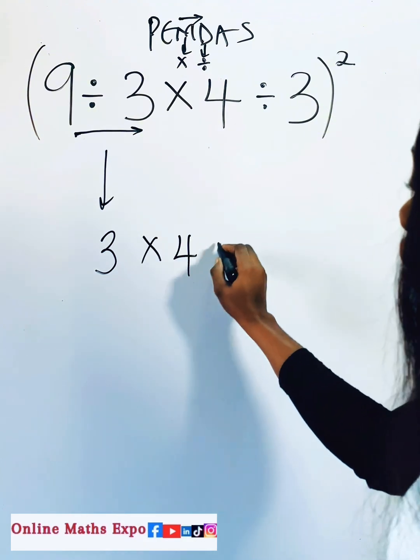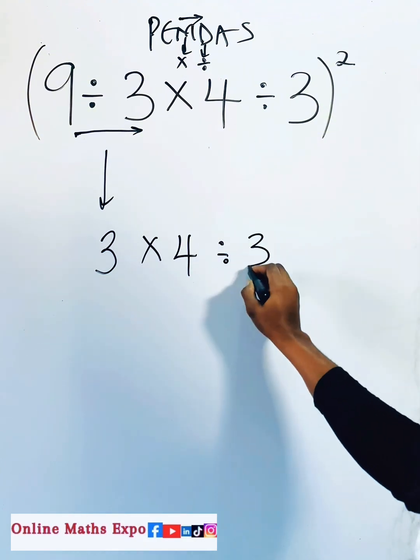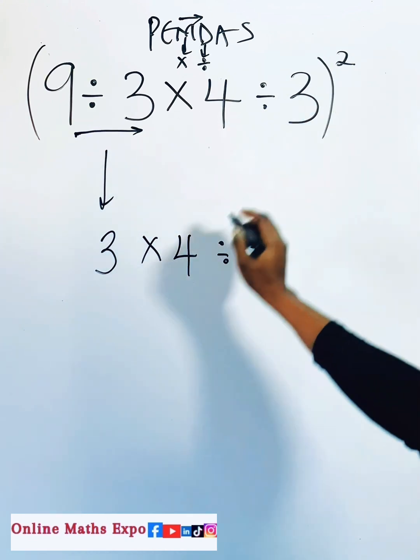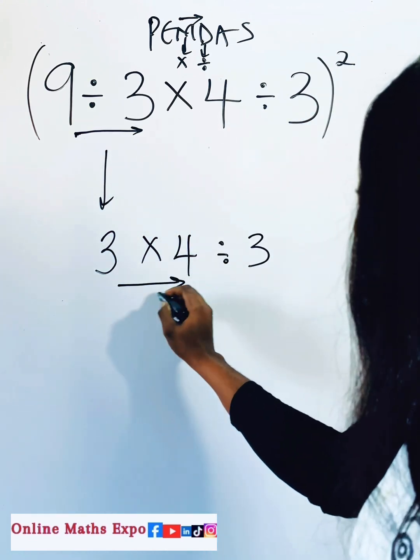Multiplied by 4 divided by 3. So we are working with the bracket first before we go to this exponent. So what do you do again? Deal with this.